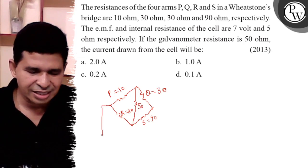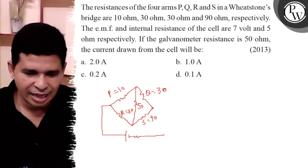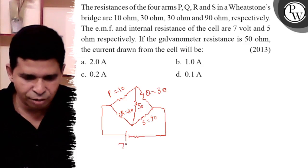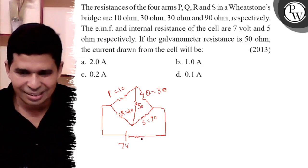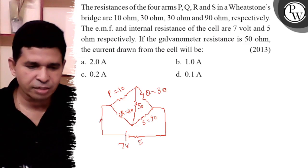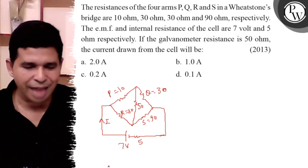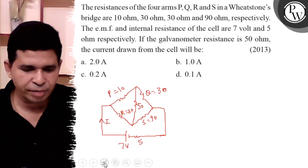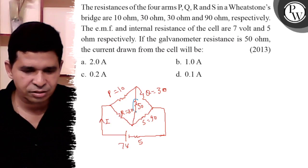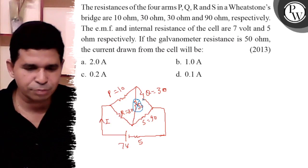So this doesn't have any meaning because the bridge is balanced. Here is the circuit diagram. We have 7 volt and 5 ohm, and we have to determine the current I. The bridge is balanced, so there is no meaning of that galvanometer resistance. It is removed because the bridge is balanced.